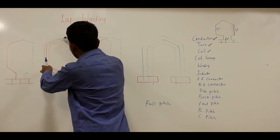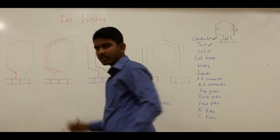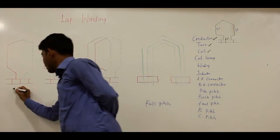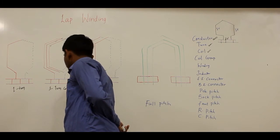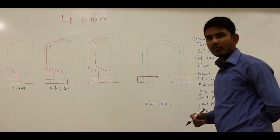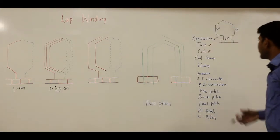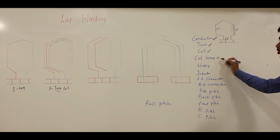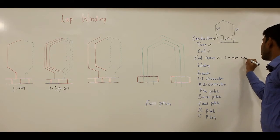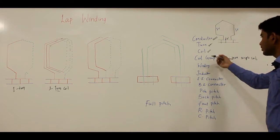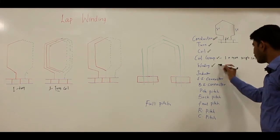A coil can be of one or more turns. Here you can see: this is one turn, this is another turn, and this is another turn — so this is a three-turn coil. This is a one-turn coil and this is a three-turn coil. From this you can differentiate between a turn and a coil. A coil group may have one or more single coils.